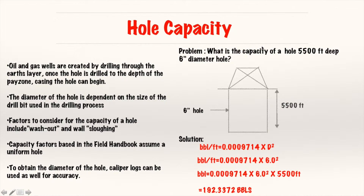Here is an example of hole capacity: what is the capacity of a hole 5,500 feet deep in a 6-inch diameter hole? For a hole, you use the actual diameter — not the ID. If it were casing or tubing, you'd find the ID from the field data book. Just plug in the value, multiply by height, and obtain your answer.